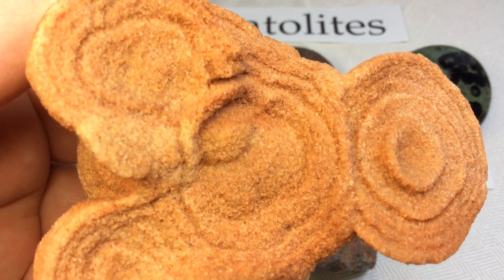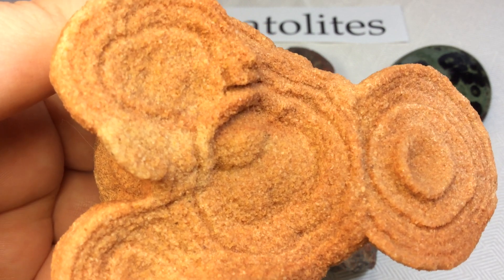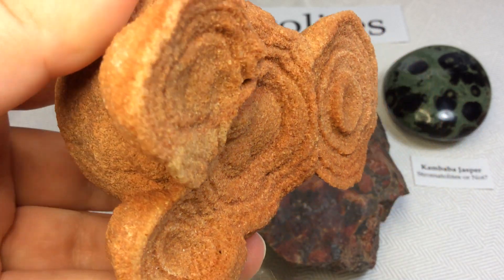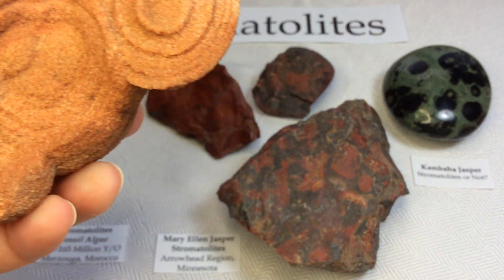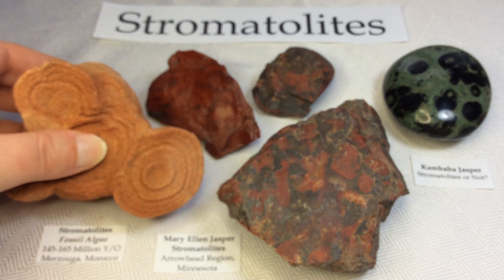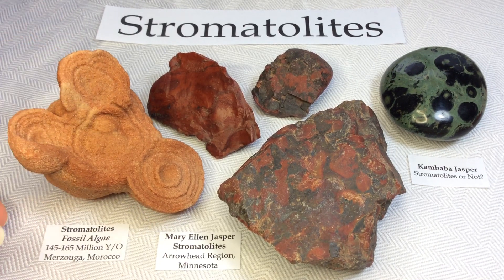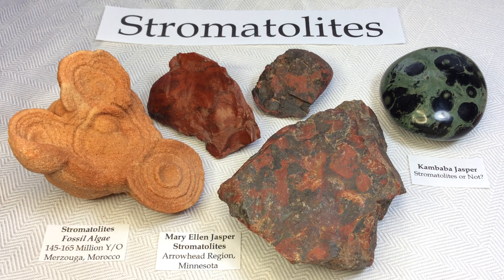Stromatolites occur widely in the fossil record of the pre-Cambrian but are rare today. Very few ancient stromatolites contain fossilized microbes. So let's do a little recap. Stromatolites, sometimes referred to as stromatoliths, are layered accretionary structures formed in shallow water by the trapping, binding, and cementation of sedimentary grains by biofilms of microorganisms, especially cyanobacteria, commonly known as blue-green algae.